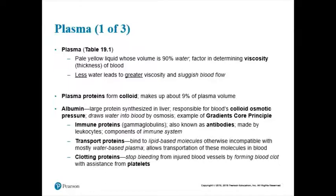Another group of proteins in your plasma are immune proteins, sometimes called gamma globulins or antibodies. Things in this class have lots of names — immune protein, gamma globulin, or antibody. Immune functions mean you're fighting infections. This is part of your immune system — it's helping to fight infections.